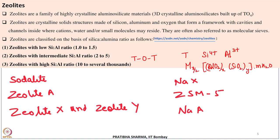In zeolite structures, the T-O-T bond is highly flexible. This flexibility allows the tetrahedrons to get linked in a variety of ways to form a large number of network topologies. There are therefore a large number of such zeolite structures existing. This flexibility of the T-O-T bond also makes the framework flexible so it can adapt to various changes in temperature, pressure, or chemical surroundings.